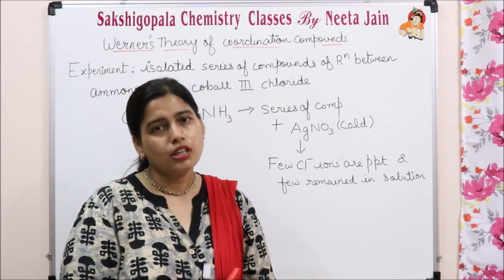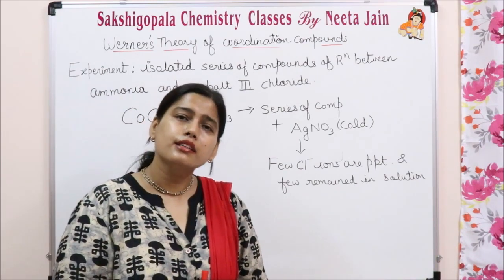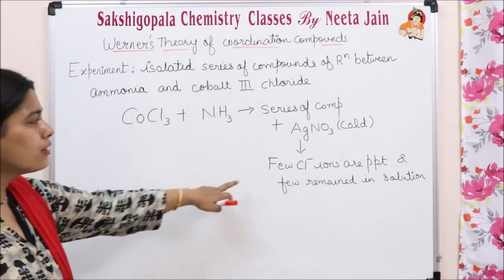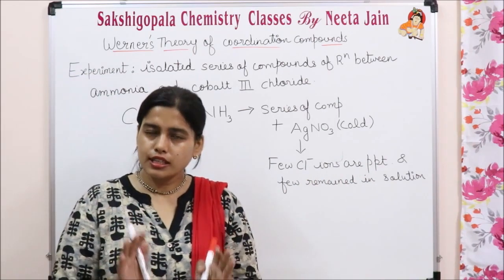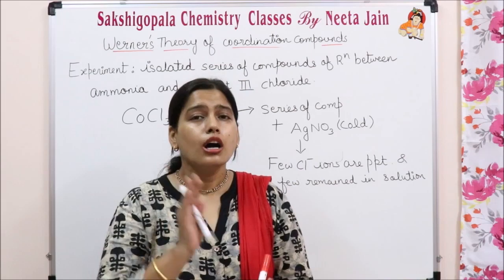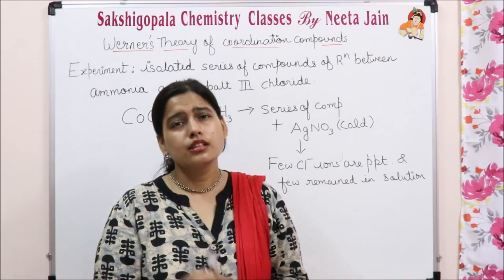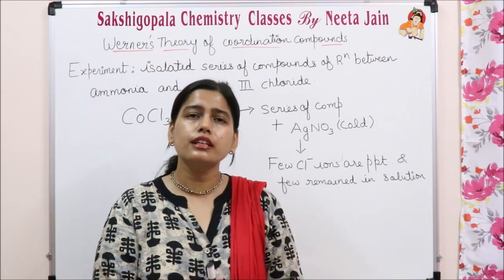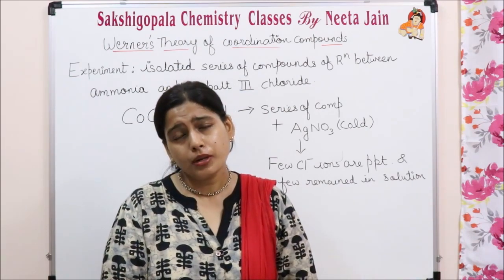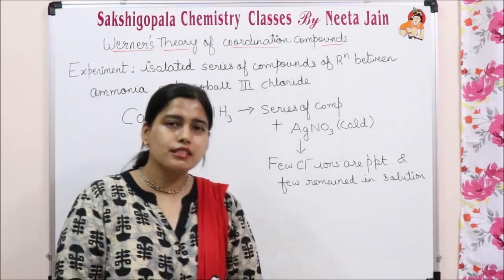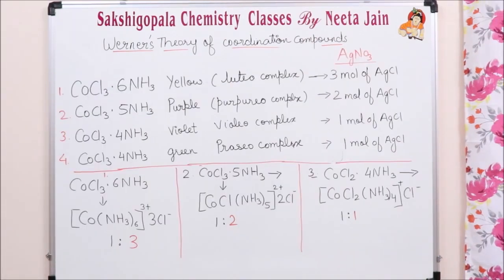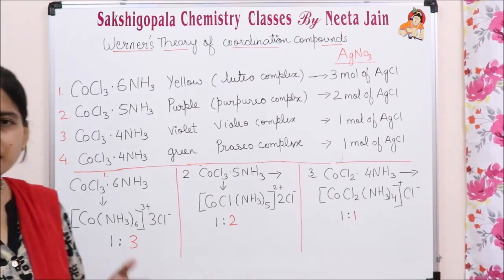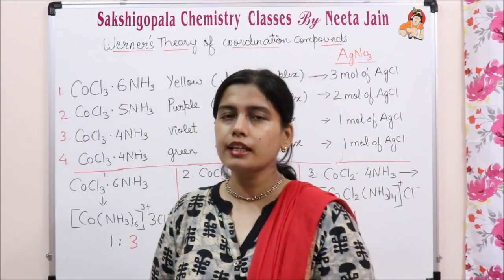Some of the chloride ions got precipitated out, and the rest of the chloride ions remained in solution as they were. A few chloride ions are precipitated out and the rest remain in solution. Let us study what the different series of compounds are which are formed. You can note them down.